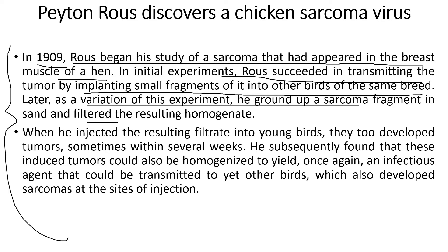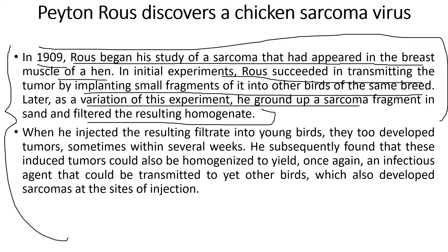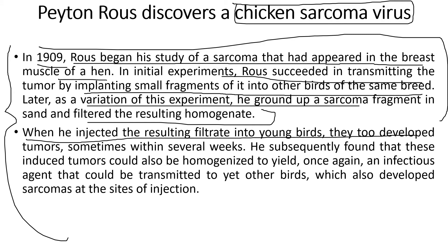Peyton Rous was the one who tried to filter and isolate the particular agent — the chicken sarcoma virus — from that chicken, and tried to inject it into different organisms. When he injected the resulting filtrate into young birds, they too developed tumors, sometimes within several weeks. He subsequently found that these induced tumors could also be homogenized to yield once again an infectious agent that could be transmitted to yet other birds.